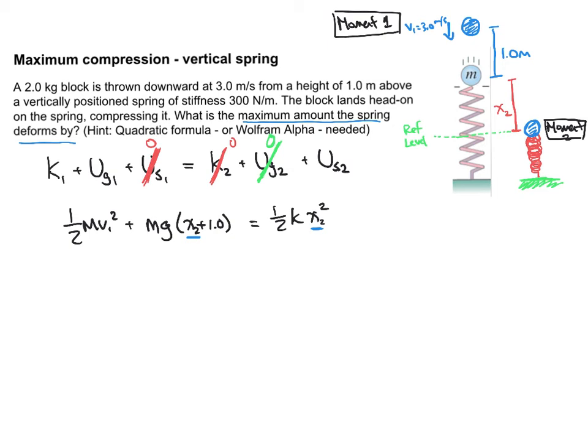So actually, there's only one unknown here. It shows up twice in the equation, but still it's only one variable we don't know. And it turns out that this is a quadratic equation. x is squared. And we also have an x term that's not squared. So we're going to be solving a quadratic here.